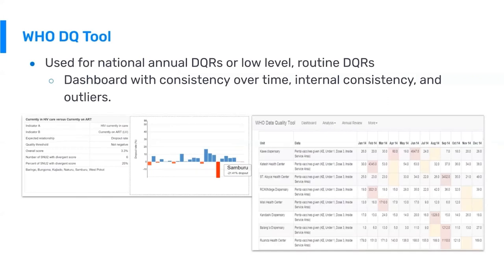Starting with the WHO data quality tool, the primary role of this tool is for national annual data quality reviews. The tool can also be used at lower levels for routine data quality reviews as well, such as district and facility. Essentially, what this tool does is it bakes in the analytics coming out of those WHO data quality review guidelines into a DHIS2 application and automatically produces those same analytics, here in DHIS2.